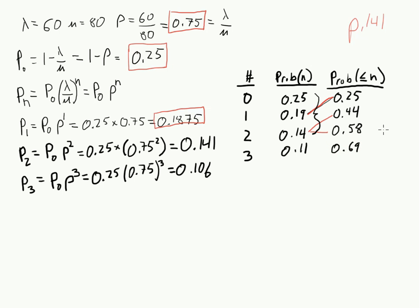So 69% of the time, we have three people or less. Let me see if we can keep going with this. Just for fun. The probability of having exactly four people is 0.25 times 0.75 raised to the 4th power. So that is 0.106 times 0.75, which is 0.0795, which is basically 8%. So the probability of having four people is 0.08.